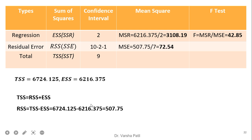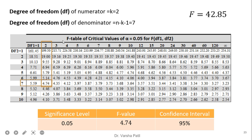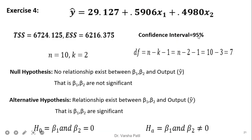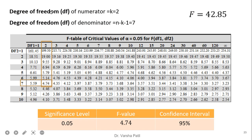We put the values into the table in a systematic way and obtain the F value as 42.85. Since the problem specifies checking at 95 percent confidence, the numerator degree of freedom is 2 and the denominator is 7, giving a table value of 4.74. Our calculated value of 42.85 is much greater than 4.74, so we reject the null hypothesis.